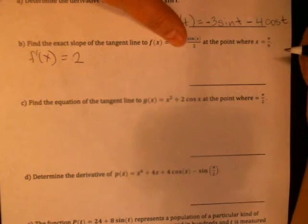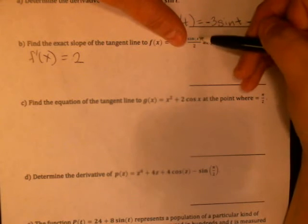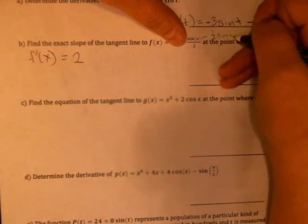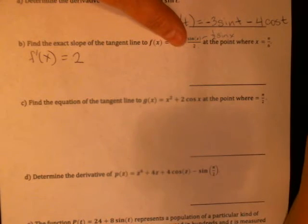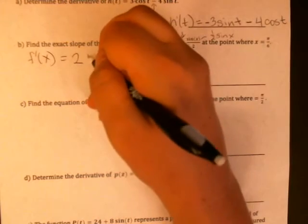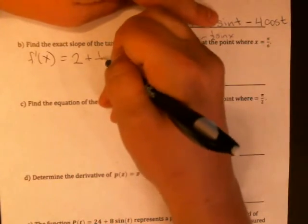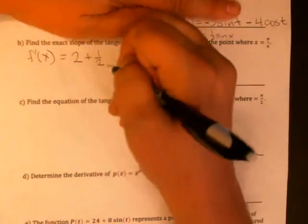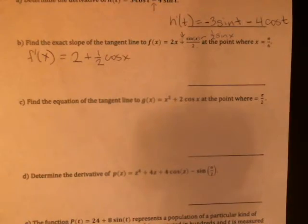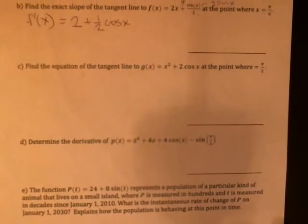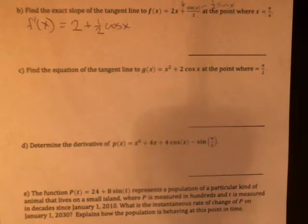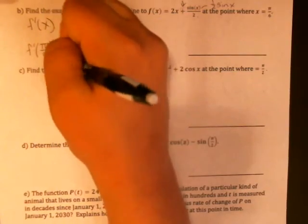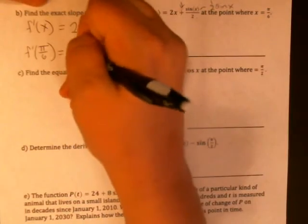And then we'd look at sine x over 2. A lot of people are thrown off by that and think they need a quotient rule, but you don't really. That's the same as 1 half times sine x. Dividing by 2 is the same as multiplying by 1 half. So that's really the plus carrying through, the 1 half just hanging out because it's a constant multiple. And then the derivative of the sine x is the cosine x. Okay, so there's my derivative. I want to know the slope of the tangent line when x equals pi over 6, which means I should plug the pi over 6 in to this equation that I just wrote down.